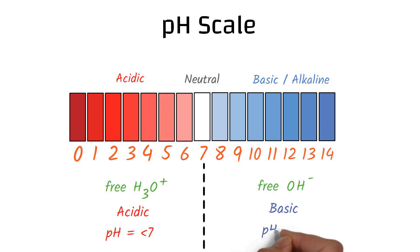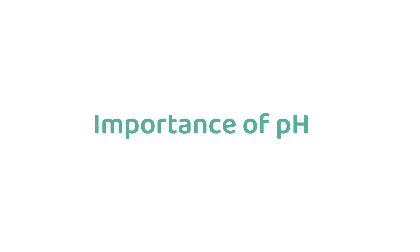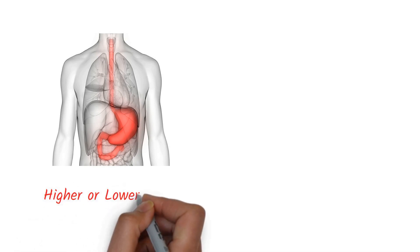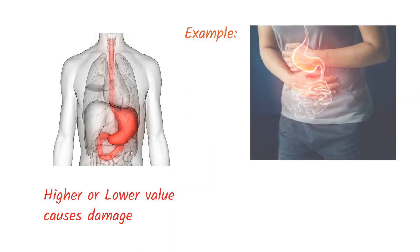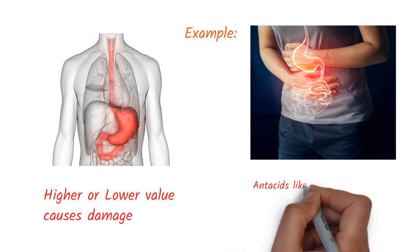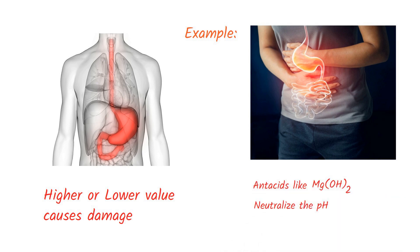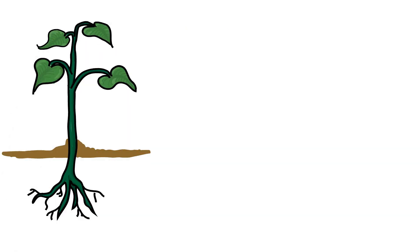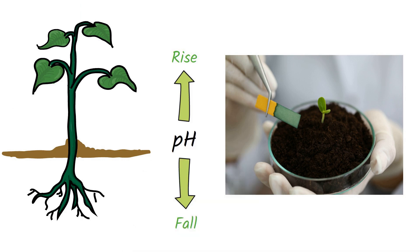Certain reactions in our body require a certain value of pH. Anything higher or lower may cause damage. For example, if too much hydrochloric acid is produced in the stomach, the patient will be advised to take antacids like magnesium hydroxide to neutralize the excess pH. In the same way, plants cannot grow if there is continuous rising and falling of pH of soil. Animals in the river cannot survive when acid rains fall on the river.